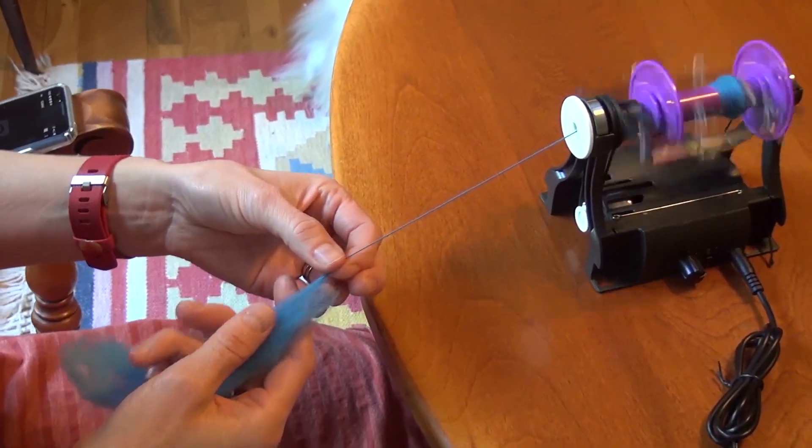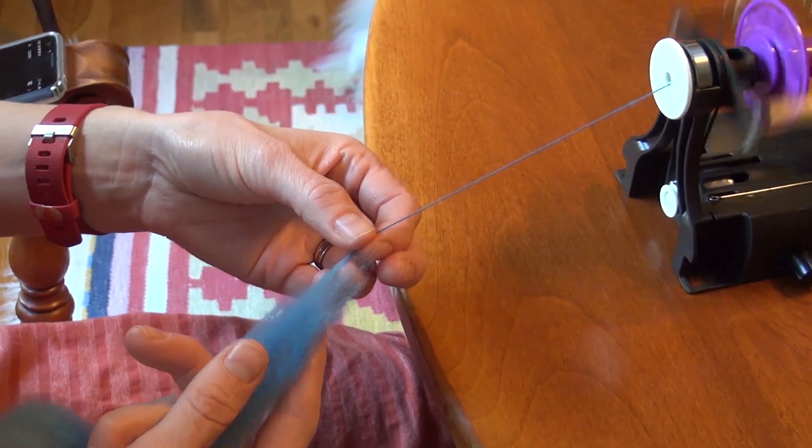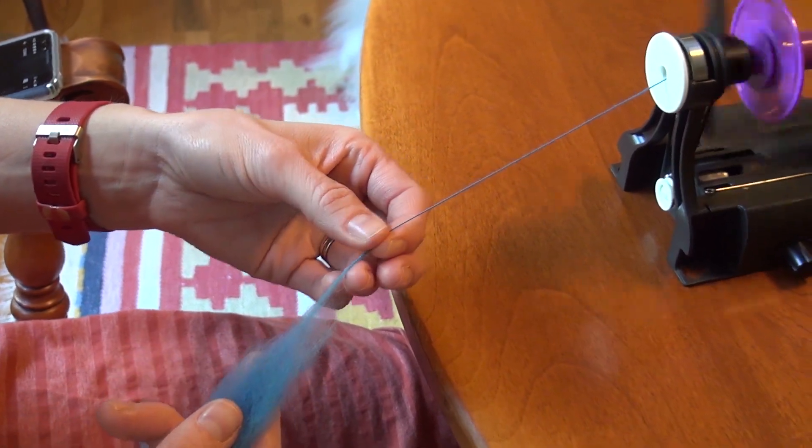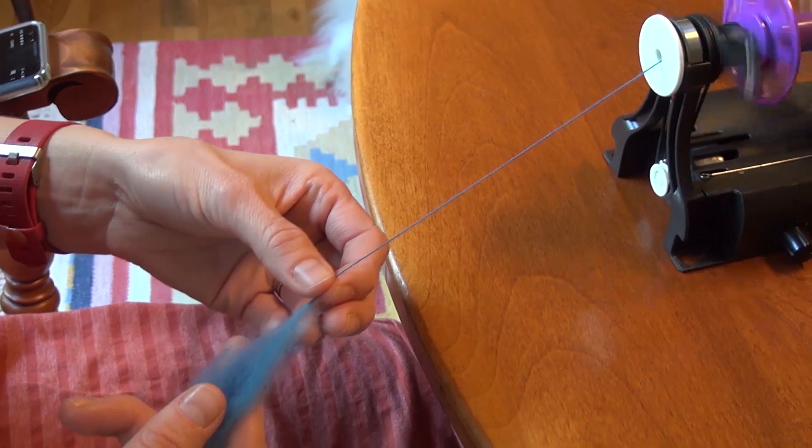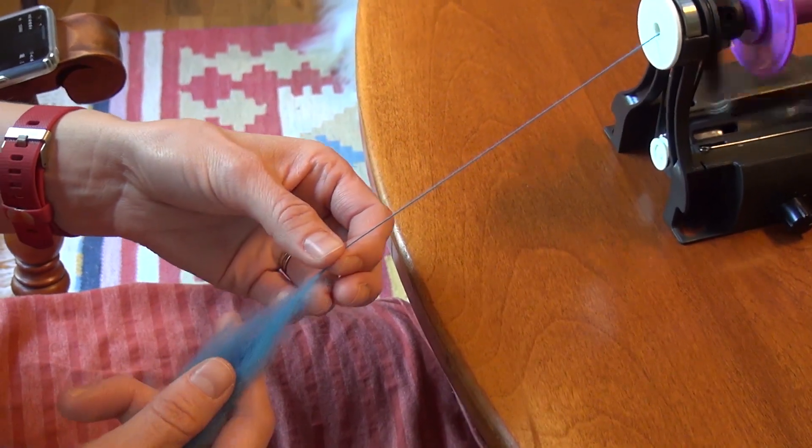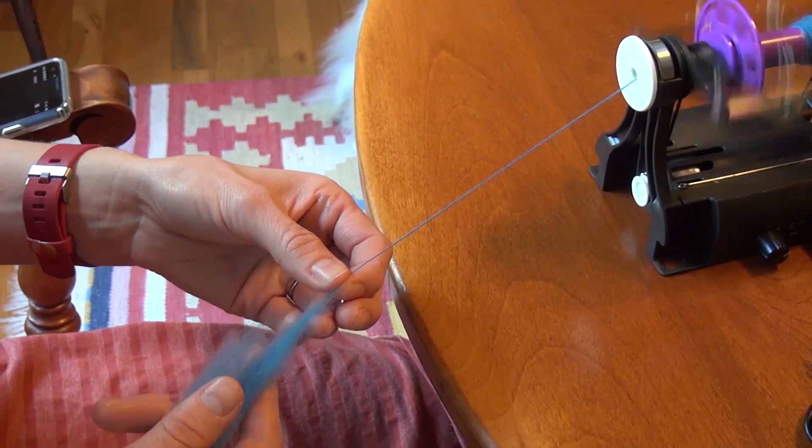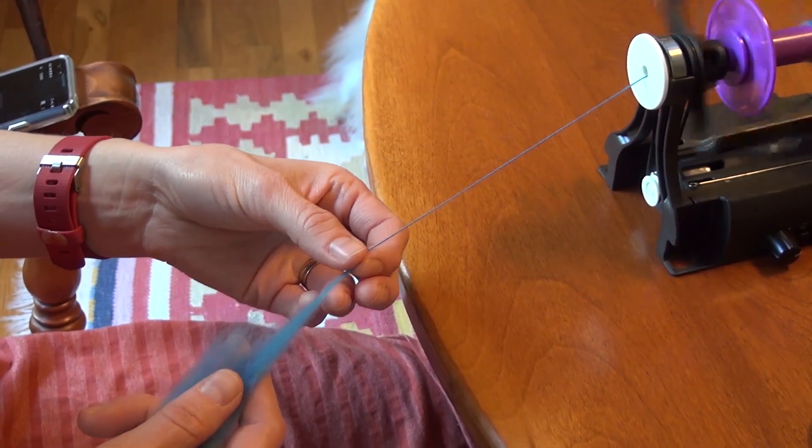Here we are spinning. As you can see we are spreading out the fiber in our upper hand and then letting it slowly go into the single we are spinning. The spreading out of the fibers in the upper hand and feeding it into the single is called drafting.